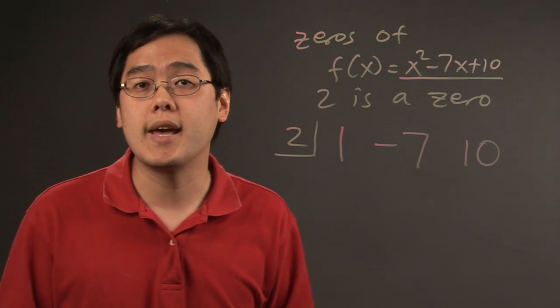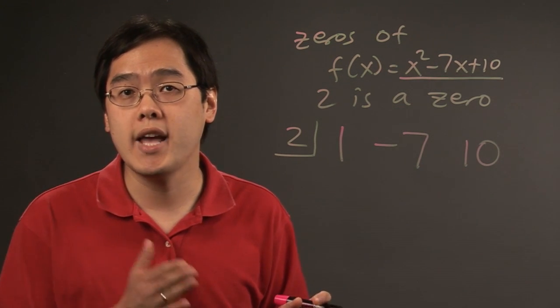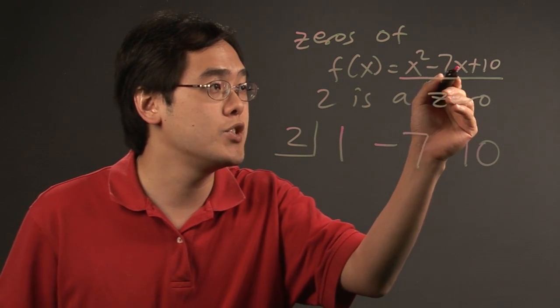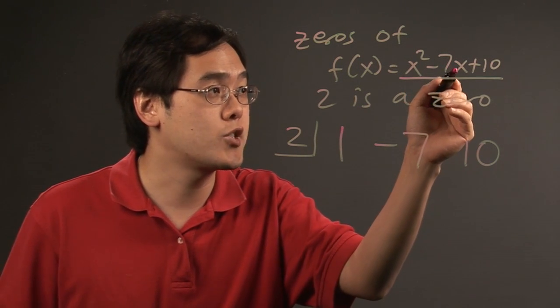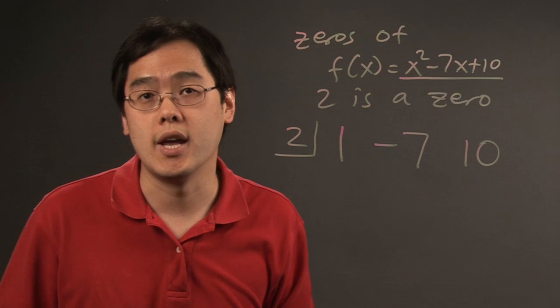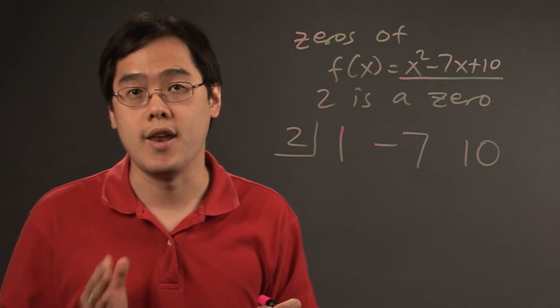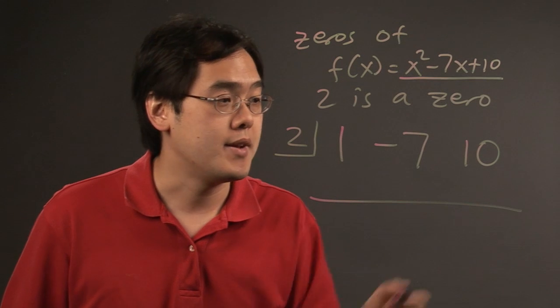You want to be sure that all the exponents for x are covered from the top. For example, if there was no x term, you would have put a zero in its place. Make sure that it's in descending order and nothing is missing.